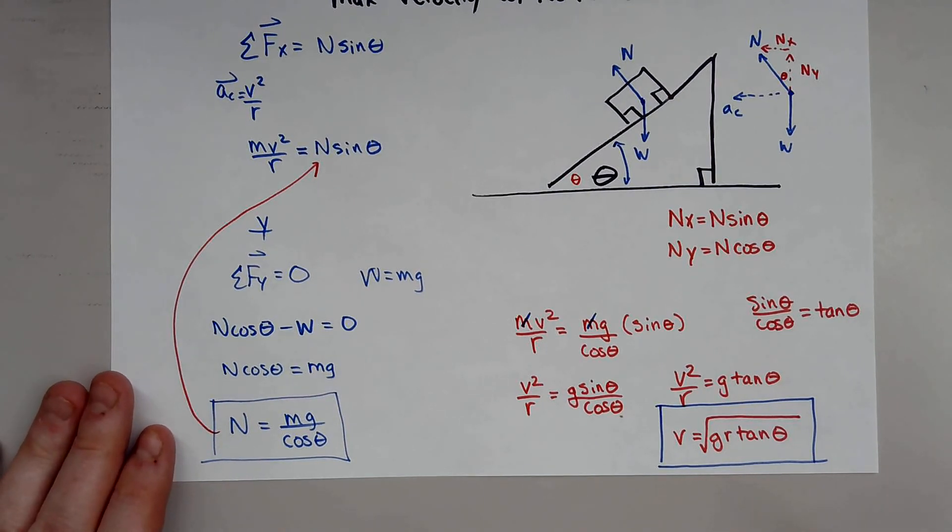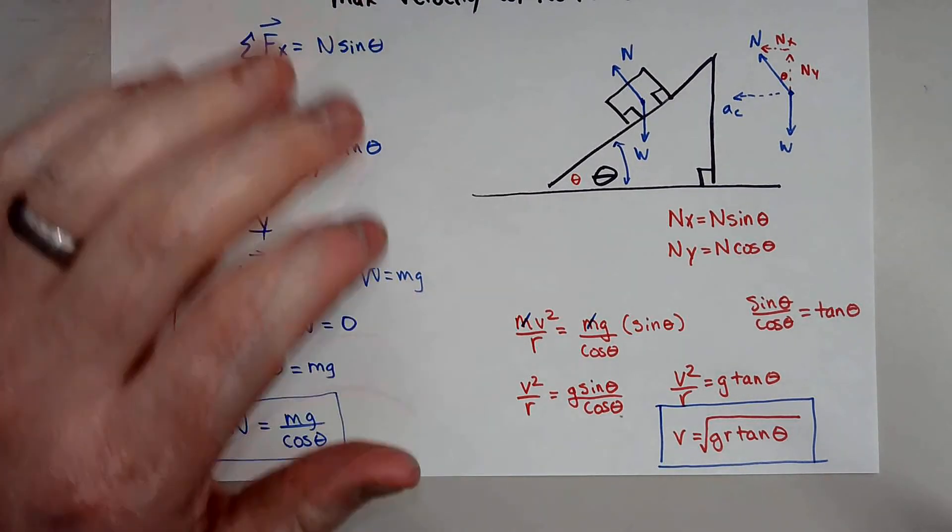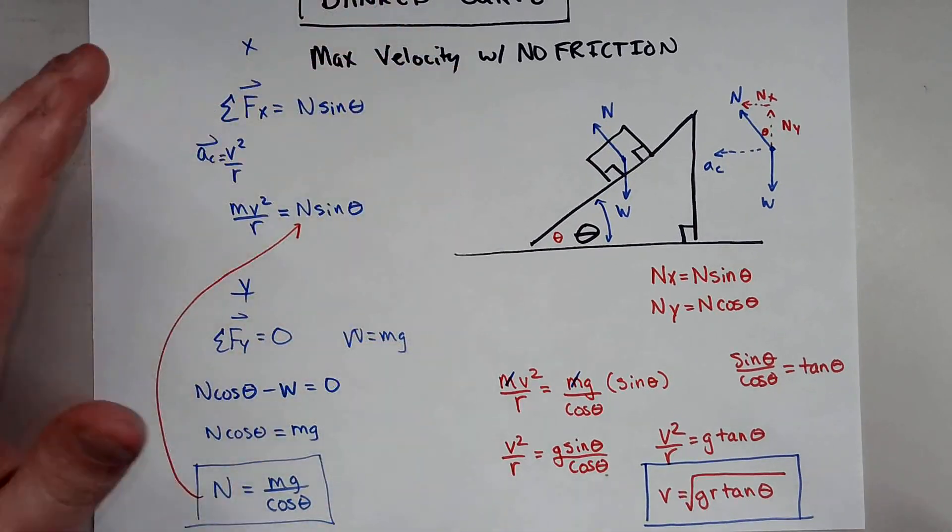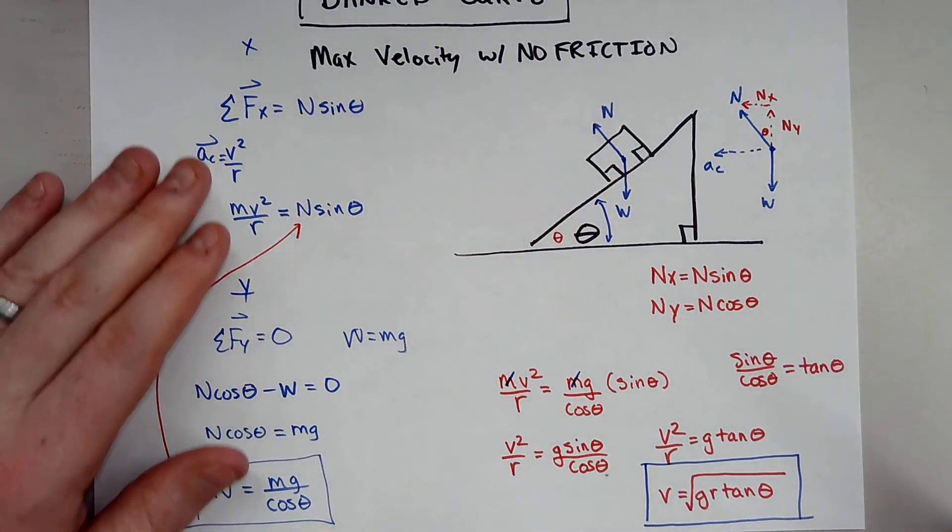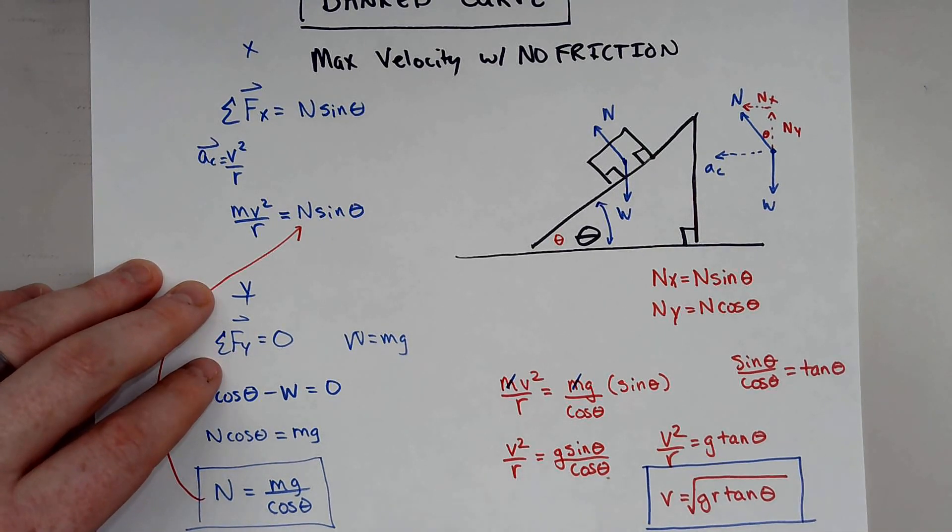So I hope this video helped, and if so, give me a thumbs up and a like. And please check out my other video if you're interested in figuring out how fast a car can go on a bank curve with friction and what's the minimum velocity so how far it can slide down. So thank you for this and give me a thumbs up and subscribe for more physics content. Have a great day.